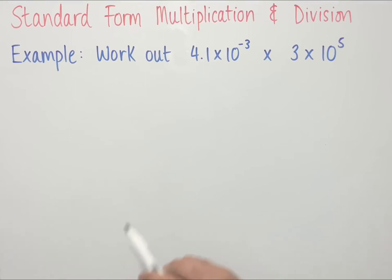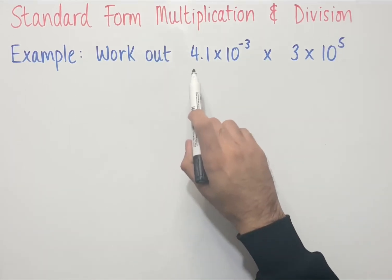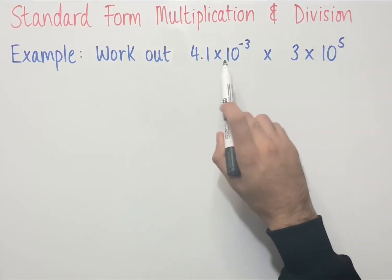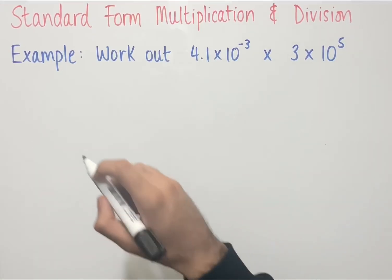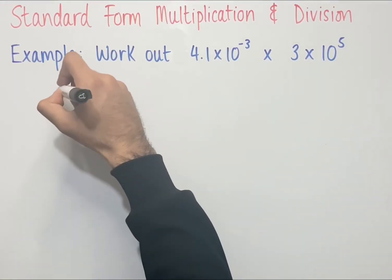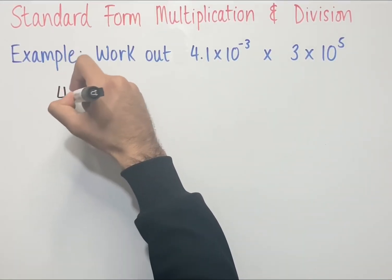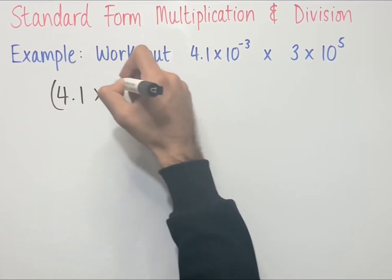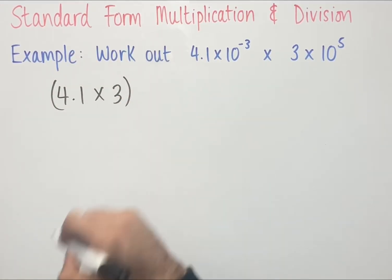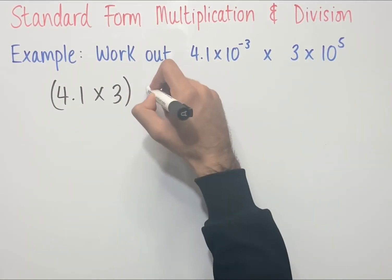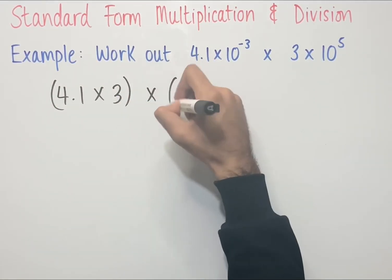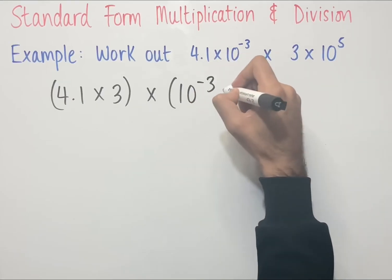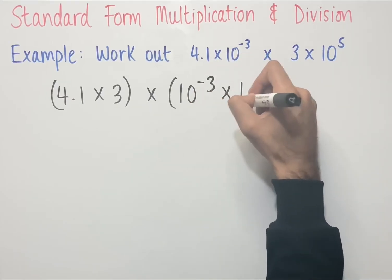The first step to answering this question is to group the numbers in front together and the powers of 10 together. So if we do that, we have 4.1 times 3 in brackets, multiplied by 10 to the power of minus 3 times 10 to the power of 5.